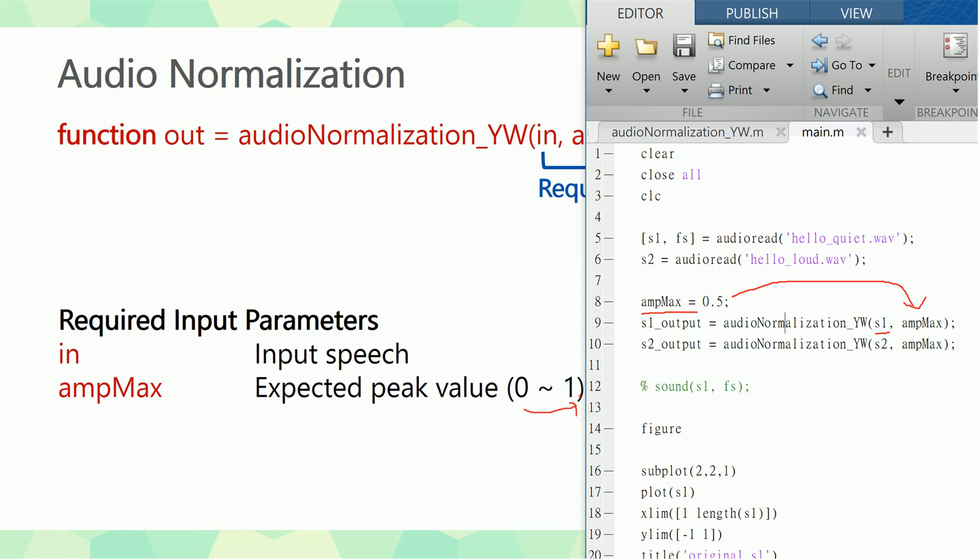This is because in MATLAB we always use float as the speech data. So we use 0.5 here. The output is s1 output, and for s2 here we use the same scale, 0.5, as the second parameter, and s2 output is the result.